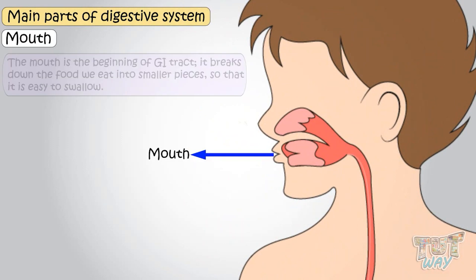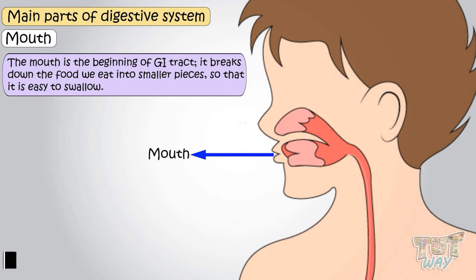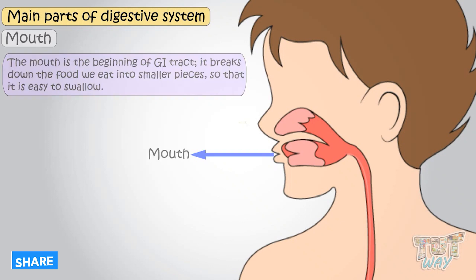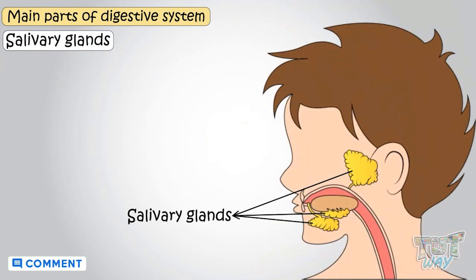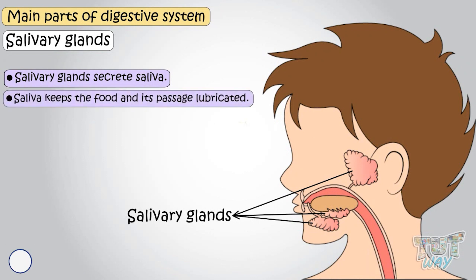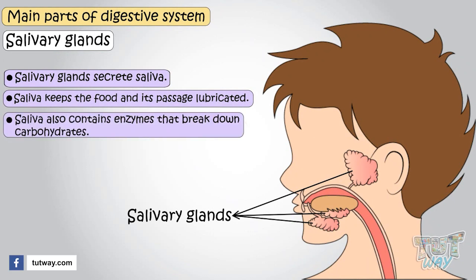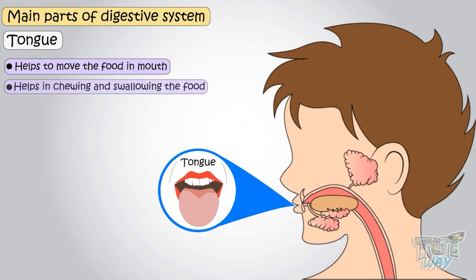Mouth — the mouth is the beginning of our GI tract. It breaks down food we eat into smaller pieces so that it's easy to swallow. Teeth help to hold, tear, and chew the food. Salivary glands secrete saliva in the mouth. Saliva keeps the food and its passage lubricated. Saliva also contains enzymes that break down carbohydrates. The tongue helps to move the food in the mouth and helps in chewing and swallowing of food.